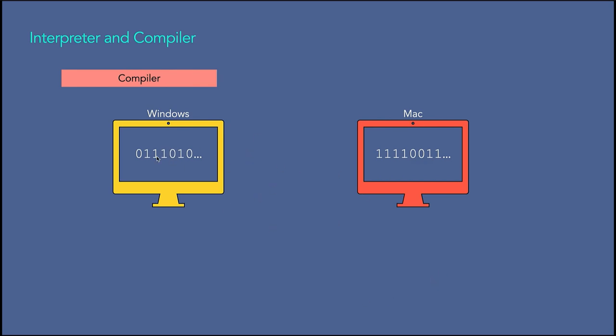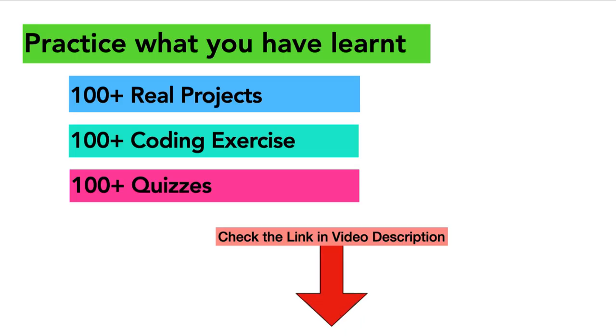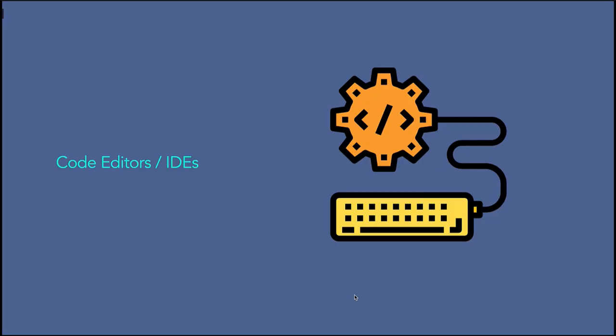For the same program, if we generate machine code on Windows it looks one way, and on Mac it looks different, because every operating system has a different architecture. That's why compiled languages are not platform independent. In this lecture we learned how computers understand programming language. There are two categories of programming languages based on their translator type, each with their own advantages and drawbacks. Hopefully you now understand how computers understand our code and how different programming languages convert source code to machine code.